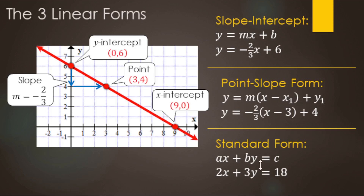Here are the three linear forms. All three equations show the same line. Slope-intercept form: Y equals slope times X plus Y-intercept — start at 6, then go down 2 over 3. Point-slope form: start at the point (3, 4), then apply the slope down 2 over 3. Standard form: graph by intercepts — for the X-intercept divide by 2: 18 divided by 2 makes 9. For the Y-intercept divide by 3: 18 divided by 3 makes 6. You can go back and forth between all three forms and their graphs.